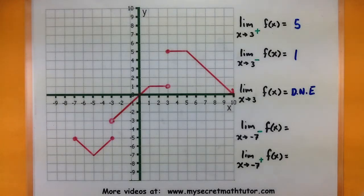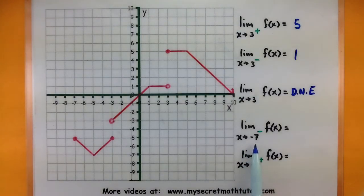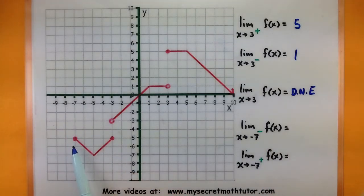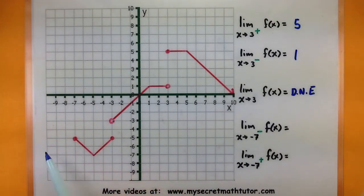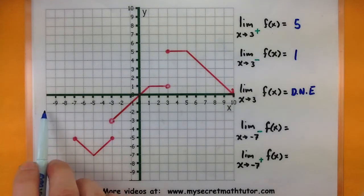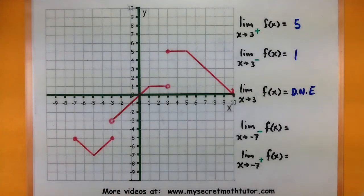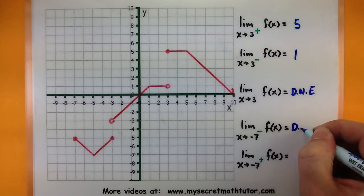Let's do one with some negatives. In this next one I want to look at what is happening to the function as x approaches negative 7 from the left side. Let's find that negative 7. We can see the function has a value at negative 7 and we want to approach it from the left side. Notice how that's a bit of a problem — there is no function to follow to figure out what it's approaching as we come into negative 7 from the left. That means this limit actually does not exist.